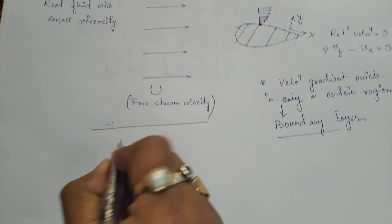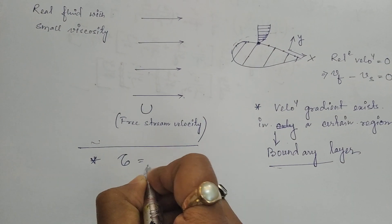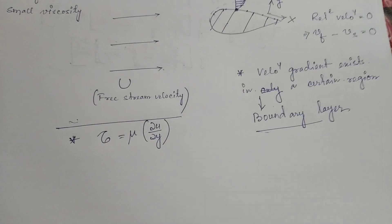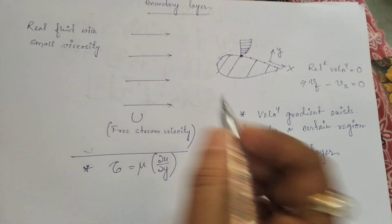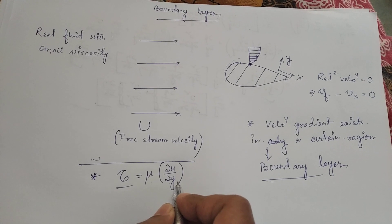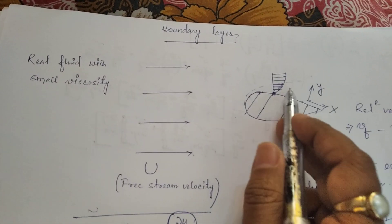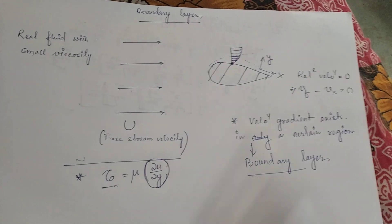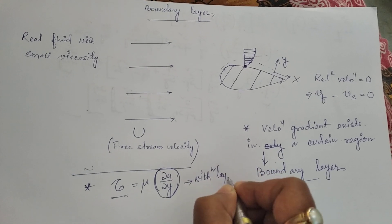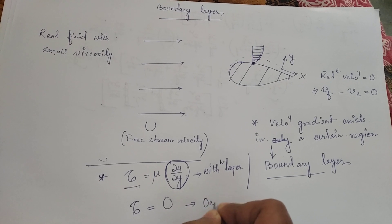From the constitutive equation, the viscous stress equals mu times the velocity gradient: τ = μ(∂u/∂y + ∂v/∂x). Since the flow is only along the x-axis, v is zero, so viscous stress equals μ times the velocity gradient. Within the boundary layer there is a velocity gradient, so shear stress exists within the boundary layer. But outside the region there is no velocity gradient, so outside the region τ equals zero.